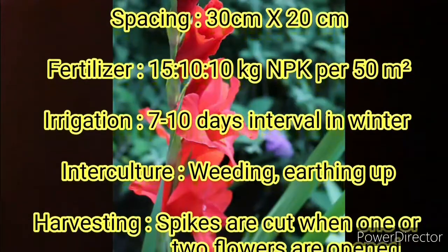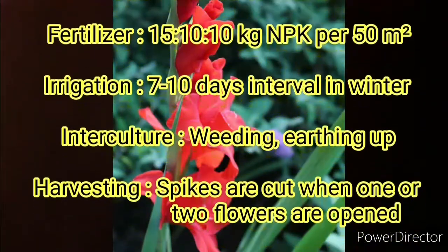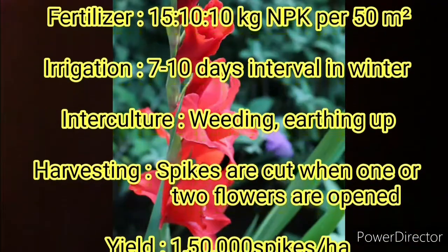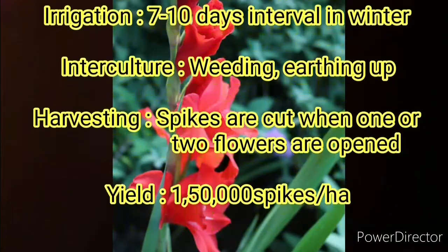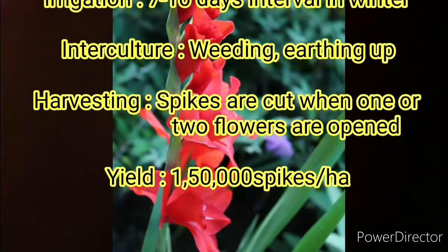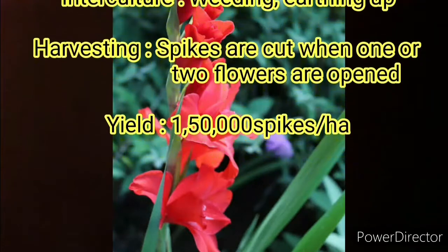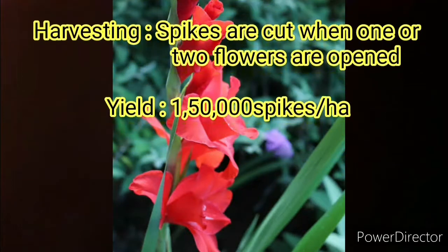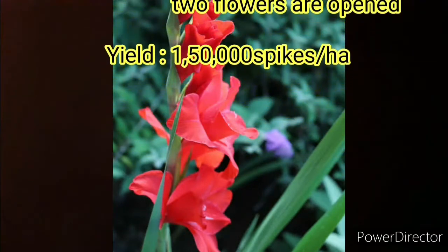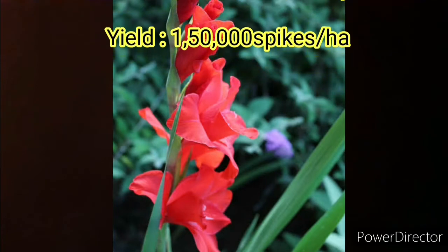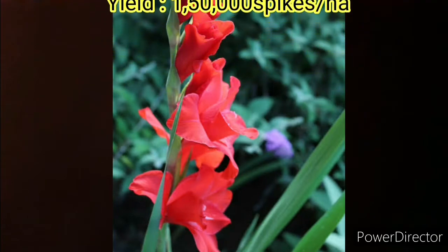Irrigation is done at 7 to 10 days interval in winter. Interculture can be done by weeding and earthing up. Harvesting is done by cutting the spikes when one or two flowers are opened, and the yield is 150,000 spikes per hectare.